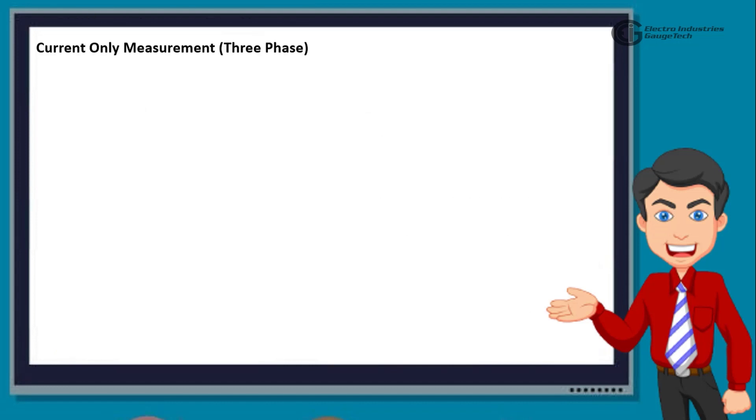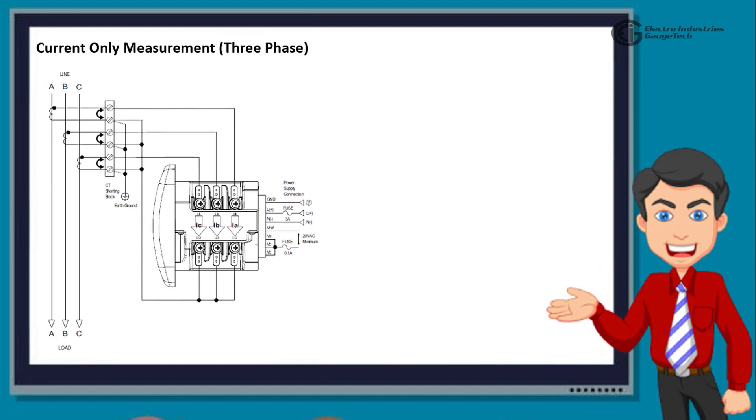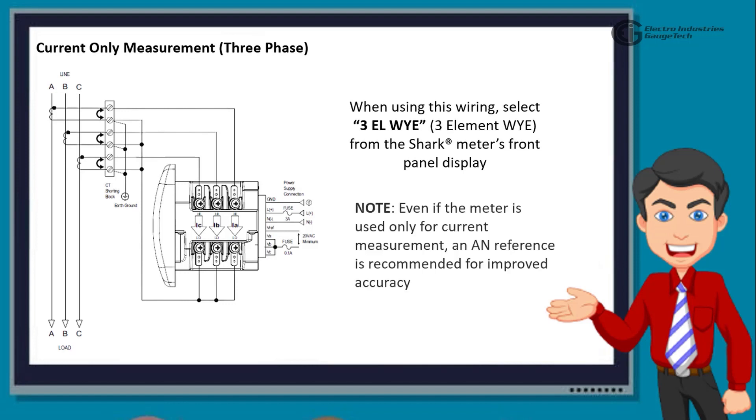The next diagram is for the current-only measurement, 3 phase. When using this wiring, select 3 L Y from the Shark Meter's front panel display. Note that even if the meter is used only for current measurement, a reference is recommended for improved accuracy.